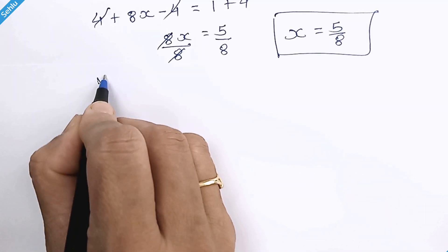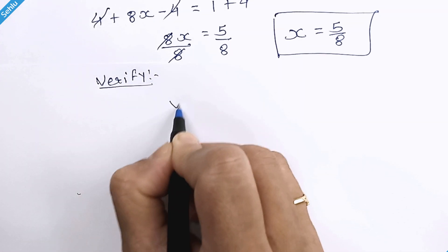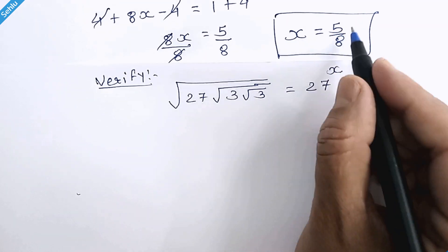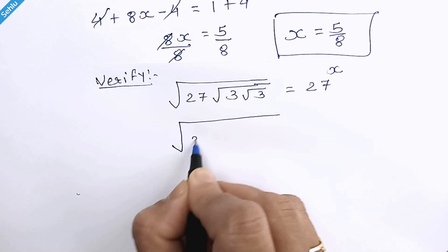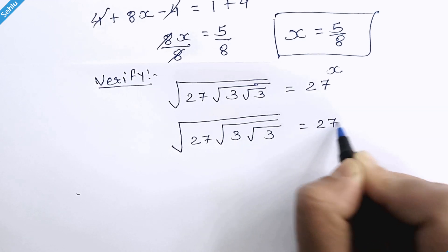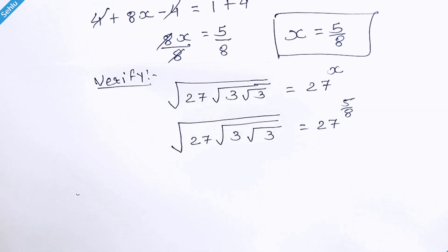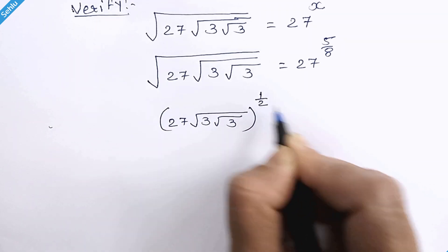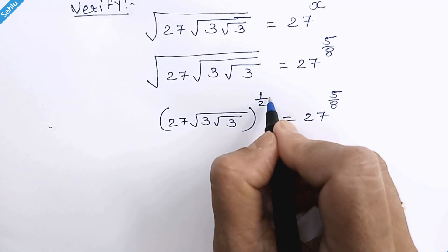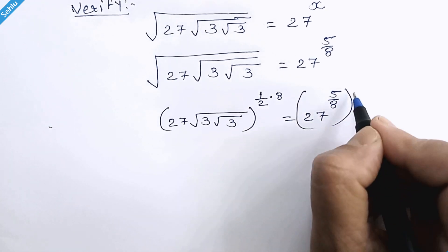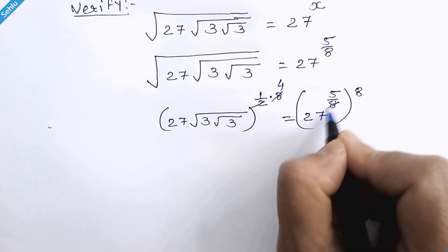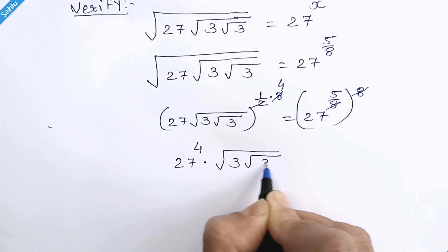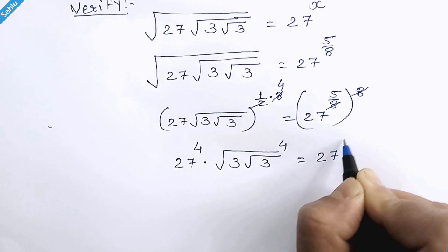Now let's verify our answer. Our given question is: substituting x equal to 5 over 8. If we raise both sides to the power 8, we get — using the exponent rules — 27 raised to 4 times square root 3, and square root 3 raised to 4, is equal to 27 raised to 5.